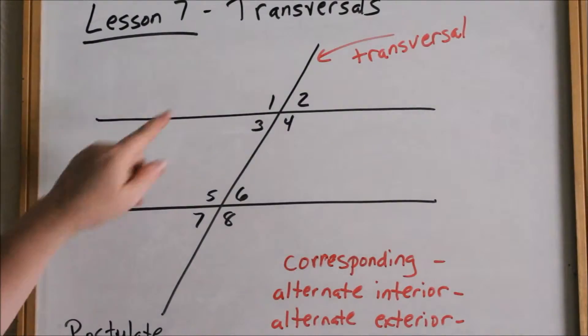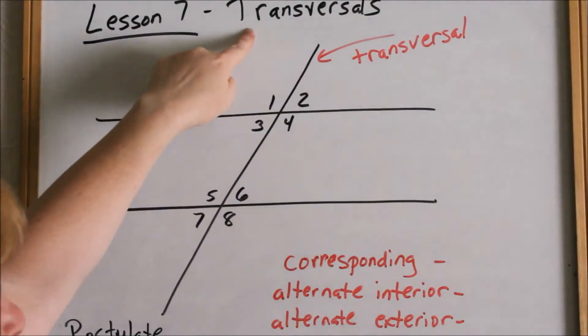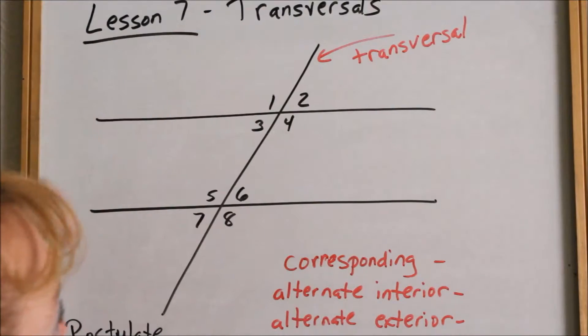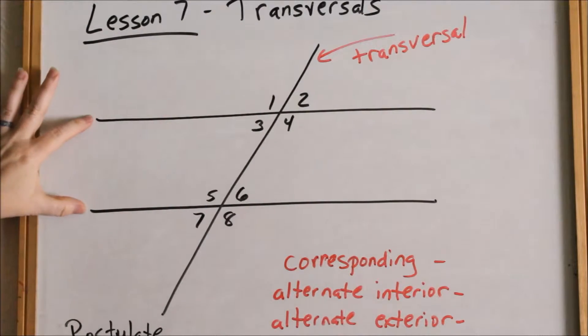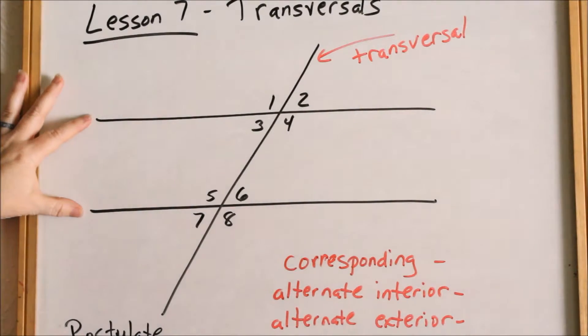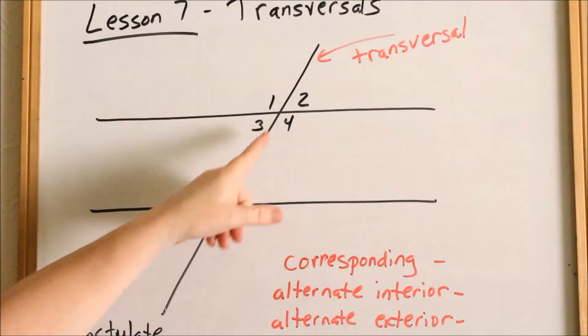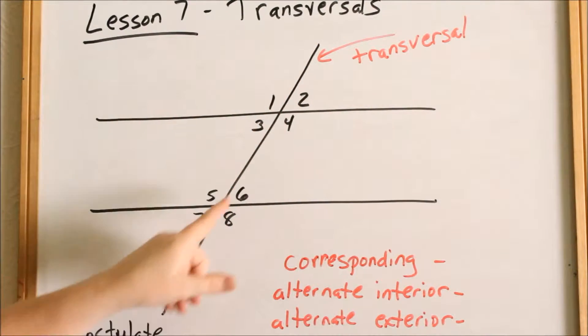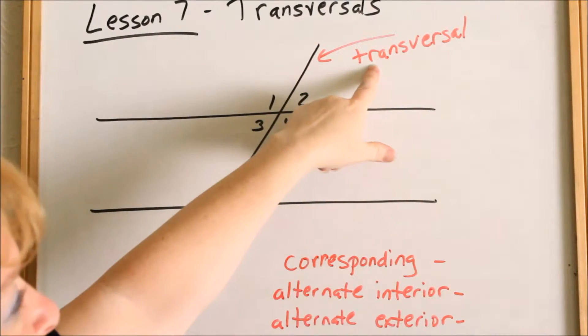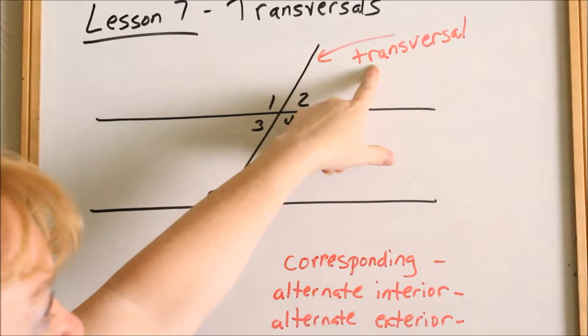We're going to be doing transversals and parallel lines today. Here I have two parallel lines, and then this line that crosses them or cuts them is called a transversal.